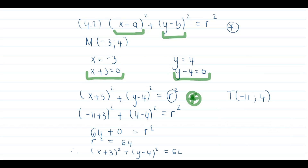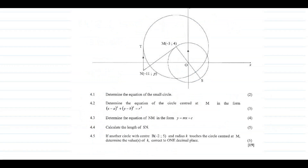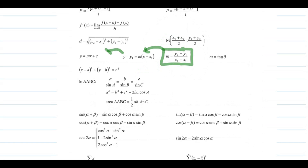Question 4.3: determine the equation of NM in the form y = mx + c. We need to find the equation of the line which is the tangent to our small circle. Usually the first approach would be to use the gradient formula m = (y₂ − y₁)/(x₂ − x₁), then substitute into y − y₁ = m(x − x₁).